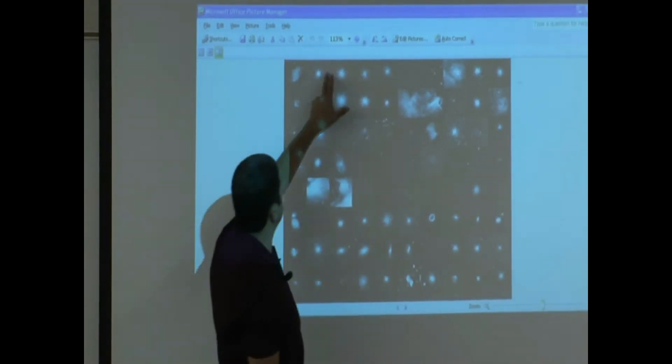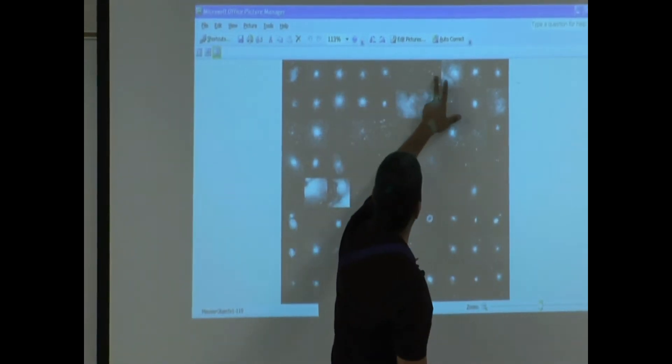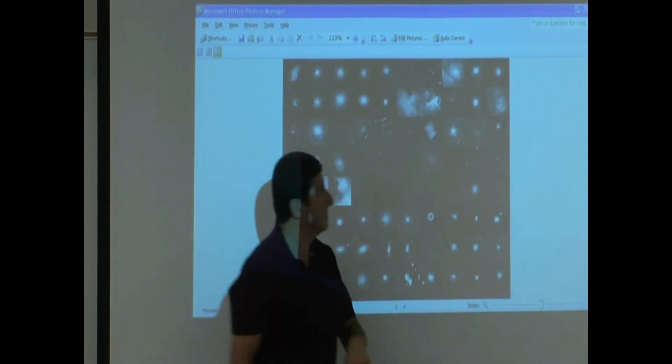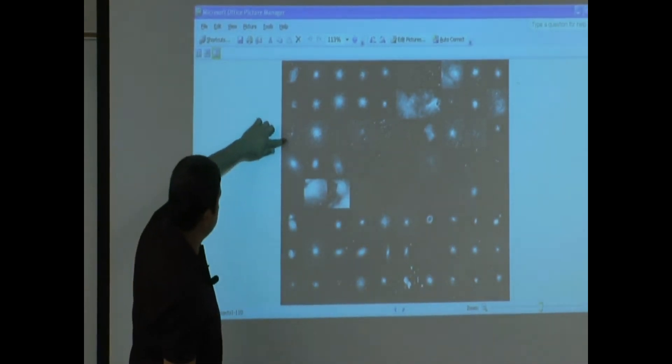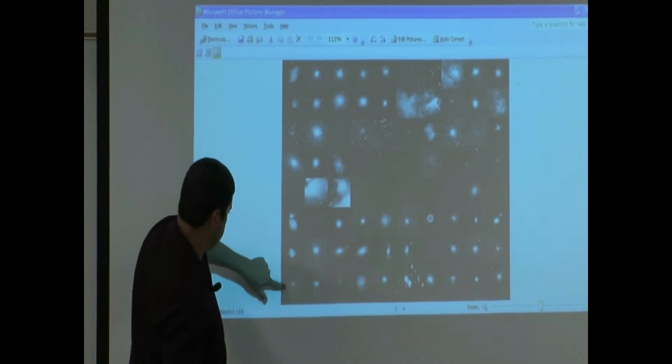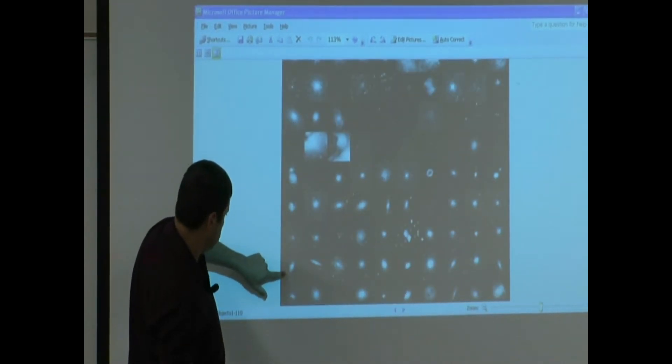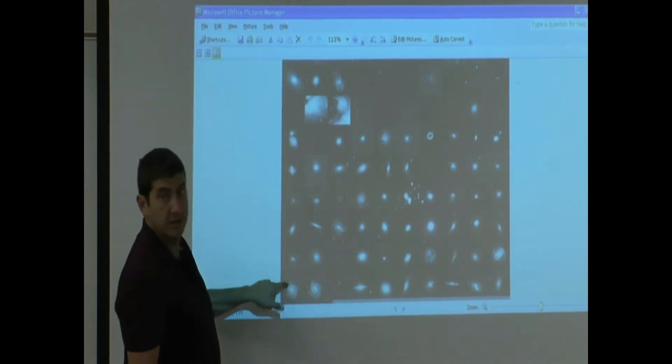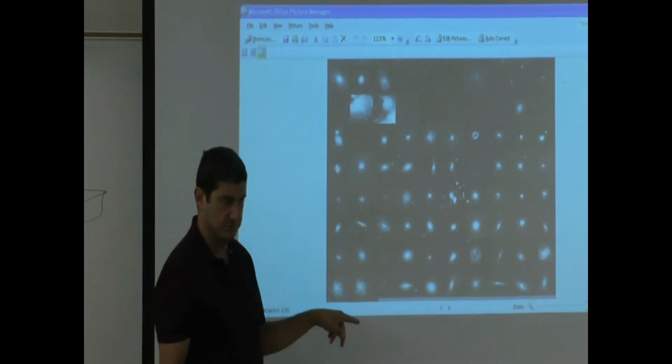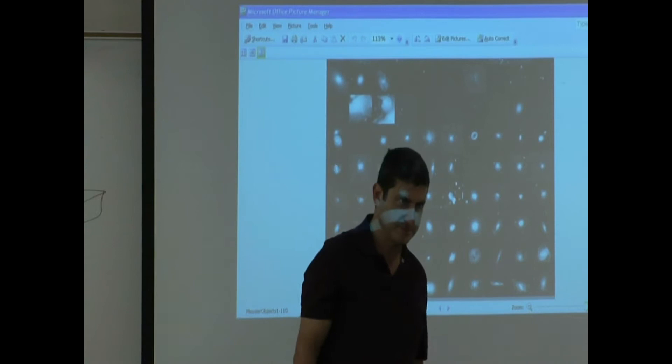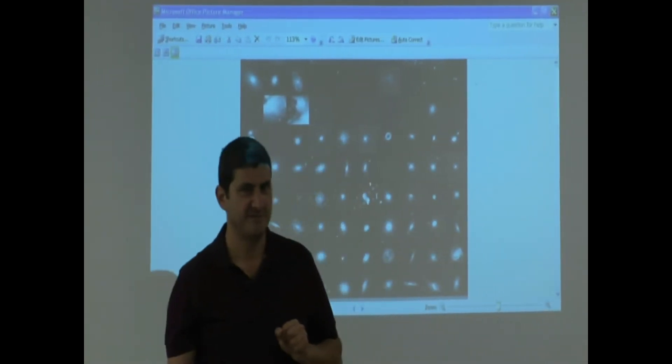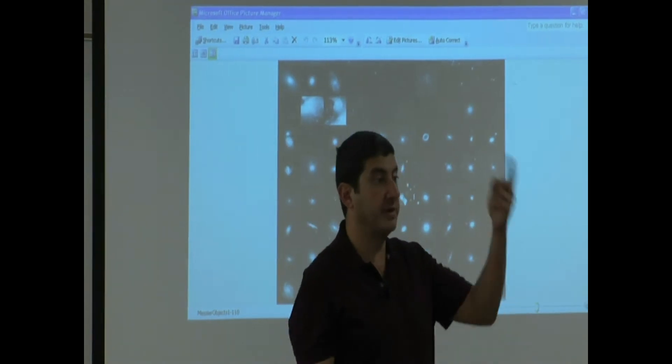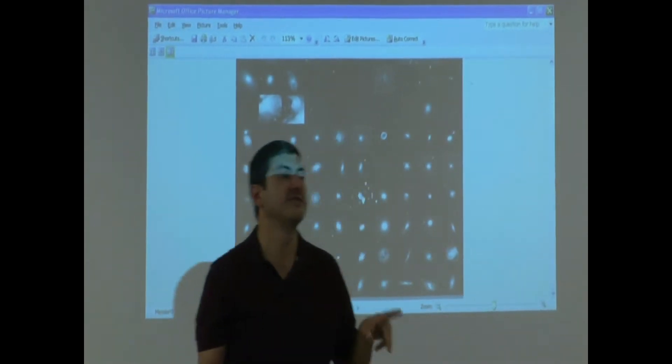It's going to have ten columns and eleven rows, which makes 110 Messier objects. How many Messier objects are there? 103, but they added seven more to it.